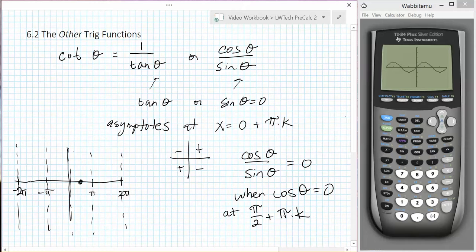Zero here, positive in the first quadrant, negative in the second quadrant. Zero here, positive in the third quadrant, negative in the fourth quadrant.